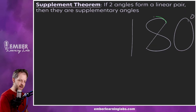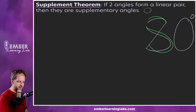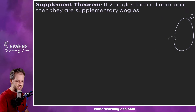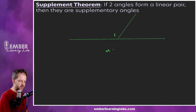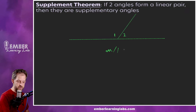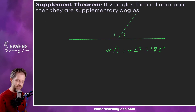Supplementary angles are angles that add up to 180 degrees — S for supplementary, make it an eight — supplementary is 180 degrees. Basically what that means is that if we have a linear pair, then the measure of angle one plus the measure of angle two equals 180 degrees.